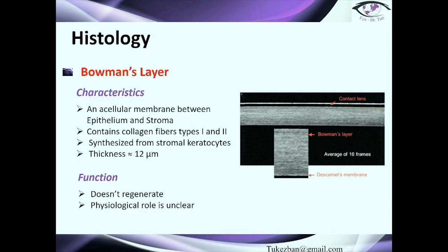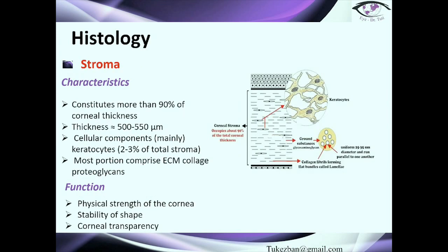Bowman's layer is an acellular membrane that contains collagen fibers type 1 and type 2, synthesized from keratocytes of the stroma. The thickness is approximately 12 microns. Its physiological role is unclear, and notably it does not regenerate. The stroma is the main part of the cornea, constituting 90% of it. Its thickness varies between 500 and 550 microns. The cellular components are mainly keratocytes, and it also consists of collagen fibers and proteoglycans. The main functions are physical strength, stability of shape, and corneal transparency.